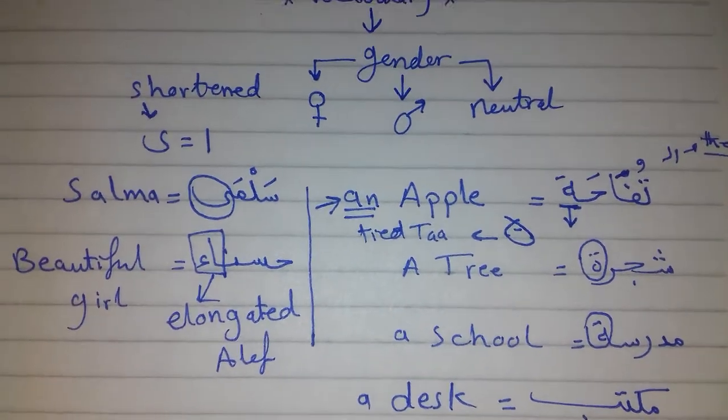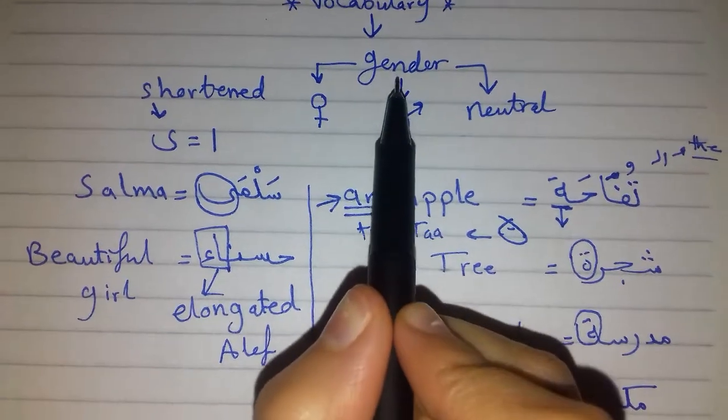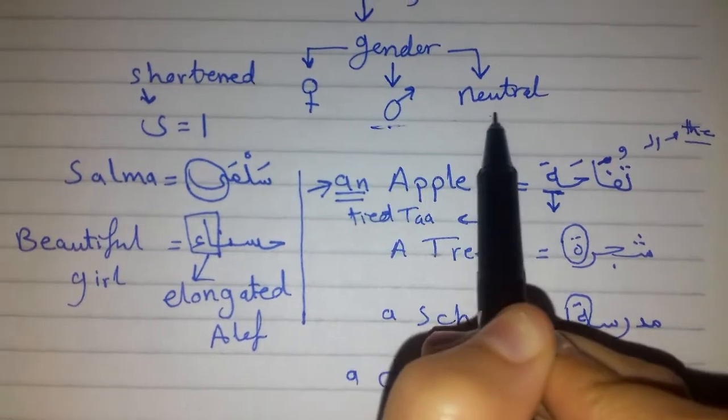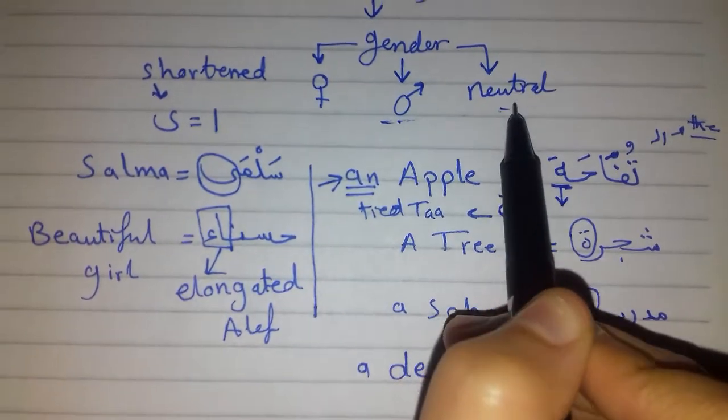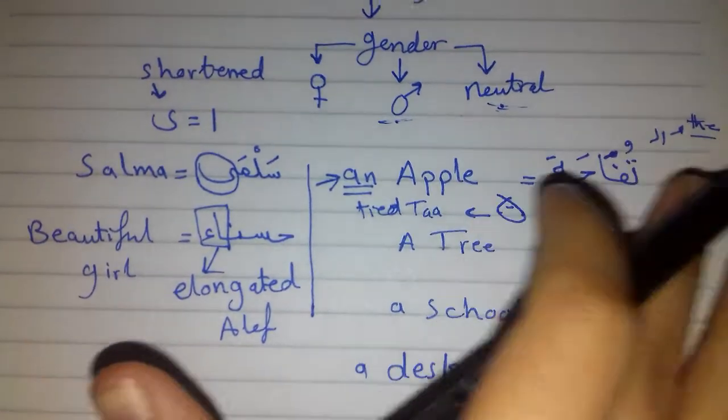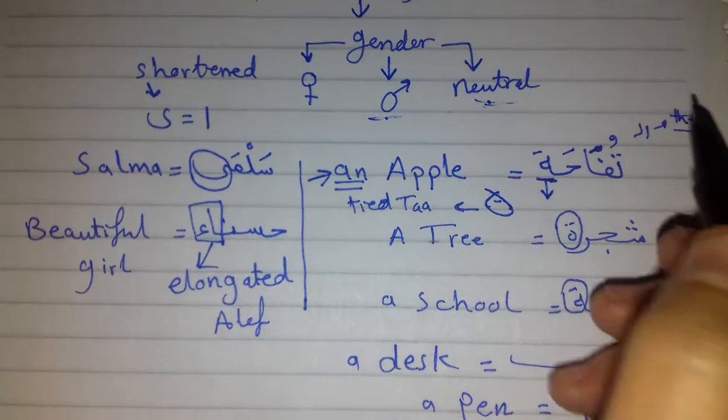So these words were so random, but I want to show you that in Arabic we have a gender. The word might be feminine, the word might be masculine, it might be neutral. By neutral, it's not neutral, I mean it can be that - it can be feminine, it can be masculine.